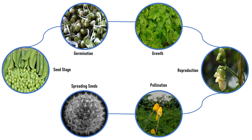Seed dispersal is the final stage of the flower life cycle. Here the seeds are spread in many ways. Some are scattered by the wind, others rely on animals, and water lilies depend on water to spread their seeds. We humans also spread many seeds intentionally by planting gardens. Once the seed falls to the ground, the plant life cycle starts all over again. This is a beautiful story of plants.